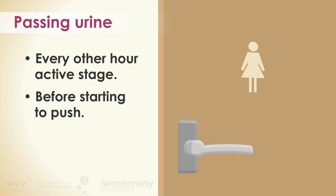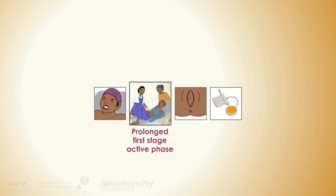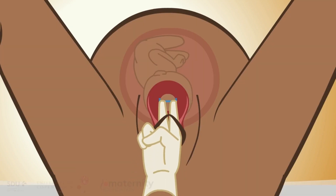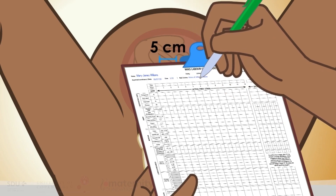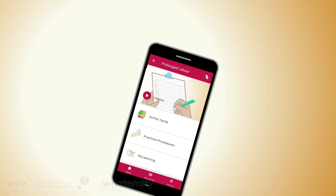Also ask the woman to pass urine before starting to push. The active phase of the first stage starts when the cervical dilatation is 5 cm. At this point, the labor care guide should be started. Follow the instructions in the practical procedure on expected dilatation and when to examine.